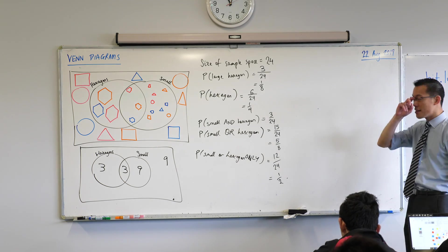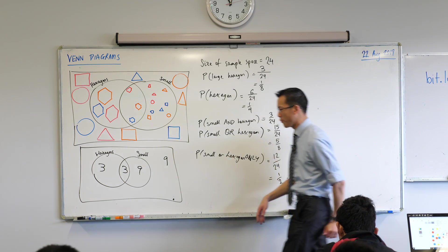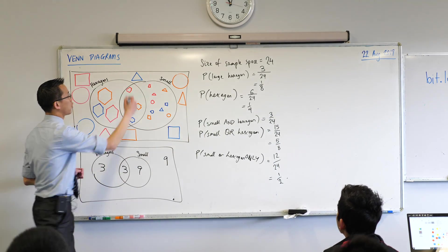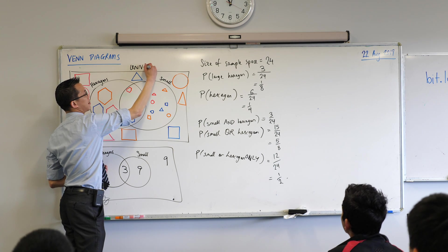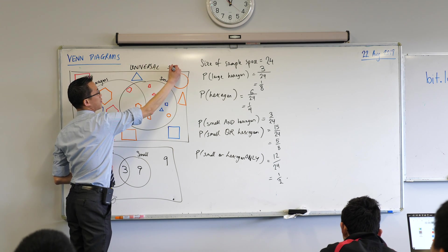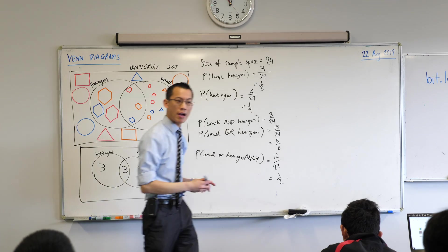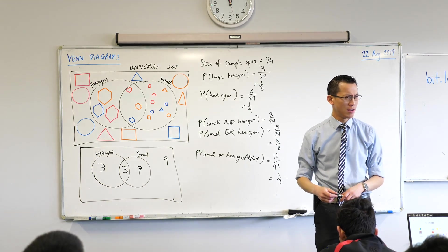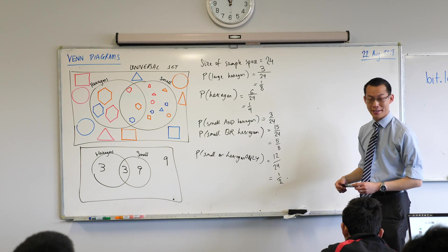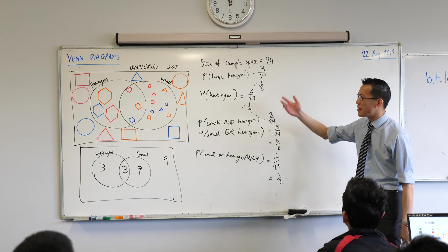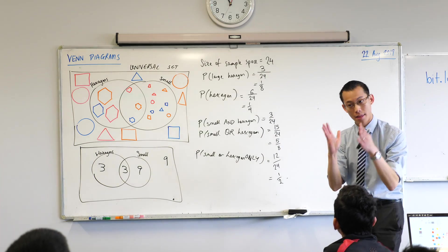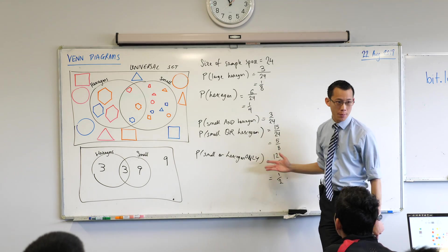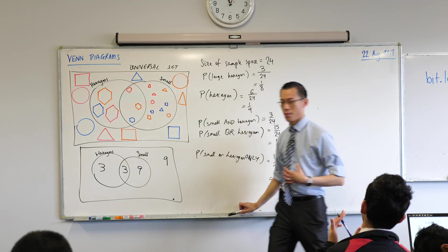This actually has a name — the big box around everything is called the universal set for this question. It's not every shape that can ever exist; for example, I don't have any trapeziums on my diagram. These are just the shapes I'm considering at the moment — this is my universe in which I answer my probabilities. So do include that box.